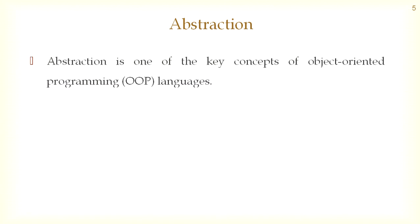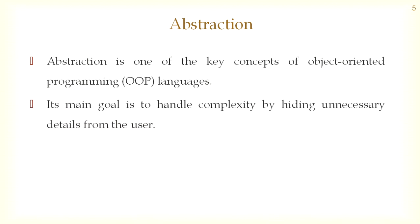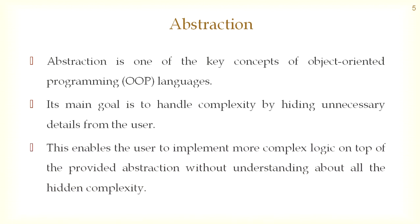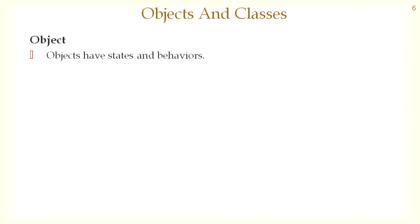The first topic in object-oriented programming is abstraction. Abstraction is one of the key concepts of object-oriented programming languages. Its main goal is to handle complexity by hiding unnecessary details from the user. This enables the user to implement more complex logic on top of the provided abstraction without understanding all the hidden complexity.